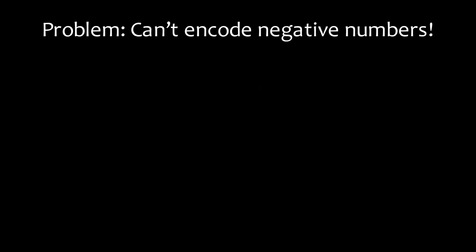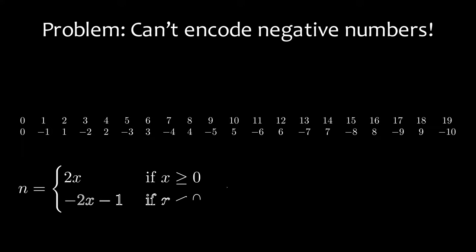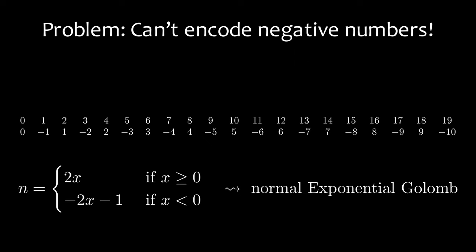The observant viewers might have noticed that we still have a problem. All the numbers that exponential Golomb can encode are positive, but residuals, as all audio data, are signed, so both positive and negative. It's a similar situation to how we didn't have 0 in Elias gamma coding. But again, there is a simple fix. If we just store positive and negative numbers alternatingly, we can make numbers of small magnitude map to few bits and keep our good properties. More specifically, we map negative x to minus 2x minus 1 and non-negative x to 2x.